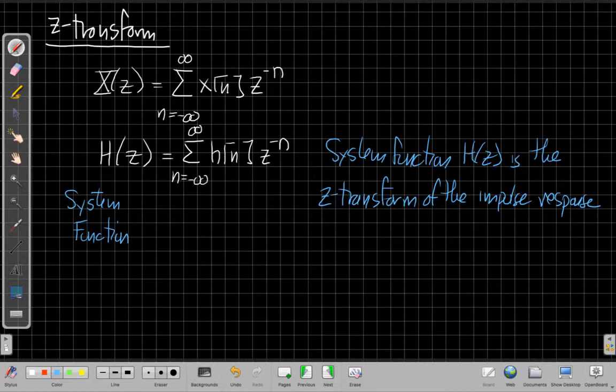Another important question is, well, that looks very similar to the sum we did for the Fourier transform - how are the two related? If I make a change of variables or a substitution, if I replace z or substitute for z e^(jω)...